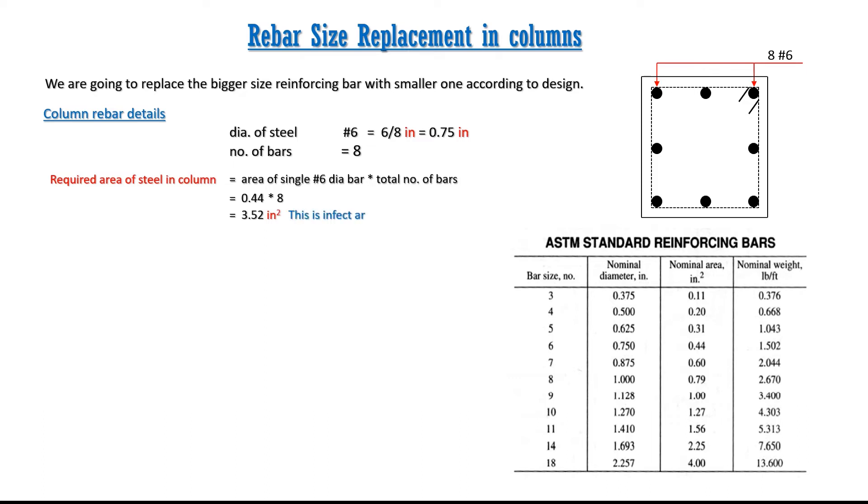Note that required area is actually the area of steel which is designed for the required strength of column to make it capable of supporting the floor loads. As we are replacing number 6 with number 5 diameter bar, required numbers of number 5 diameter bar is equal to total area of steel divided by area of single number 5 diameter bar.